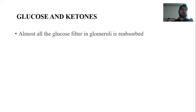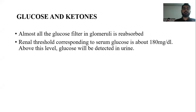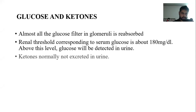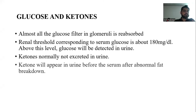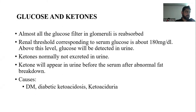Glucose and ketones: almost all glucose filtered at the glomerulus is reabsorbed in the proximal convoluted tubules. The renal threshold corresponds to a serum glucose of about 180 mg/dL; above this level glucose is detected in urine. Ketones are not normally excreted in urine but will appear before elevation in serum after abnormal fat breakdown. Causes include diabetes, diabetic ketosis, and ketoaciduria.